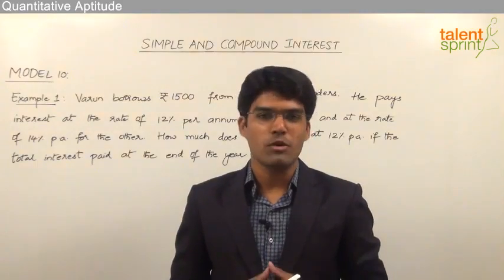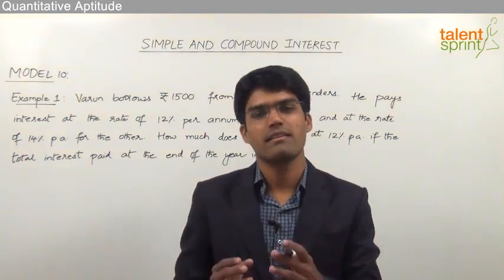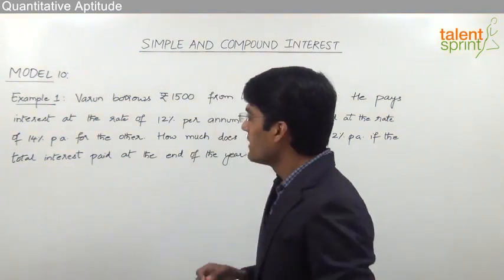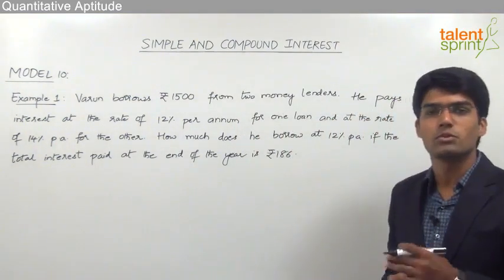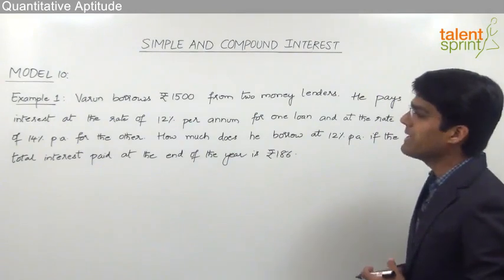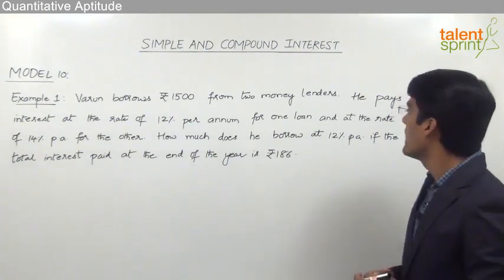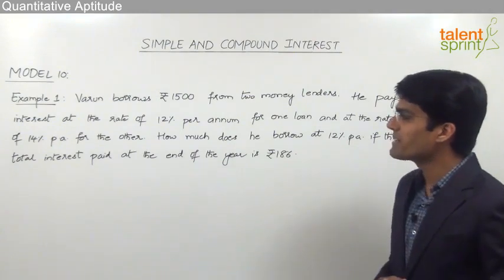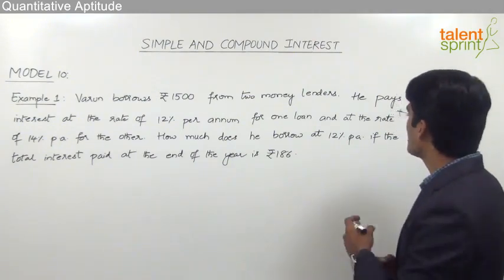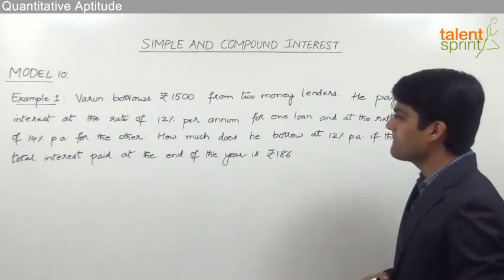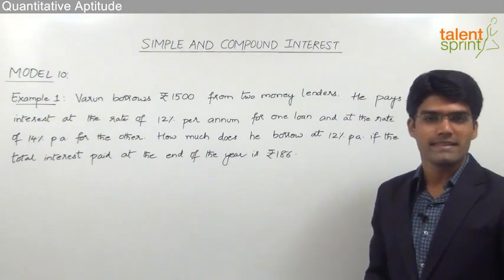Let us now take the next and the last model from this topic where we are going to discuss some questions related to simple interest. The first example here is: Varun borrows Rs 1500 from 2 money lenders. He pays interest at the rate of 12% per annum for one loan and at the rate of 14% per annum for the other. How much does he borrow at 12% per annum if the total interest paid at the end of the year is Rs 186?